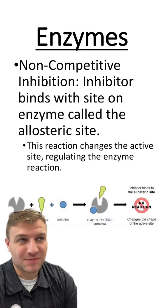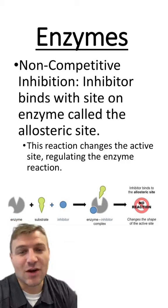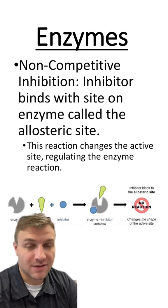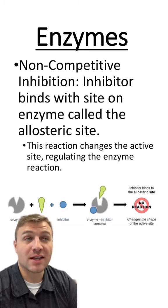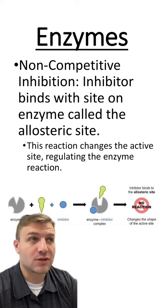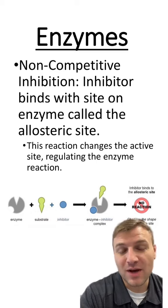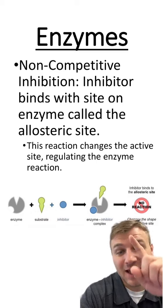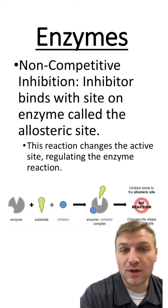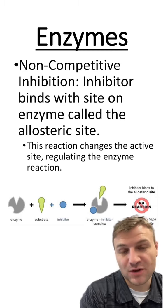Non-competitive inhibition is just the opposite. This is where the inhibitor is going to bind at a site called the allosteric site, and the allosteric site is away from the active site. So this inhibitor is not competing for the active site of the enzyme; however, it is still going to bind with the enzyme. Whenever this inhibitor binds to the allosteric site, it's going to change the active site structure, which will make it not bind with the substrate. If the substrate can't bind with the active site, the reaction is going to stop.